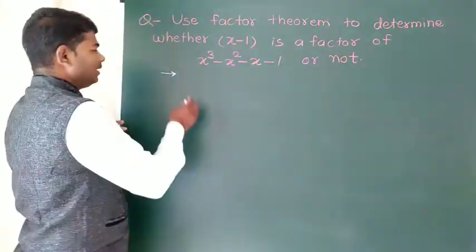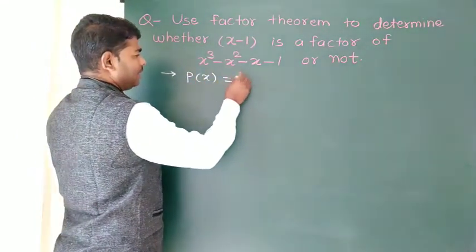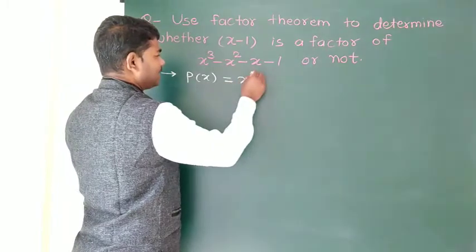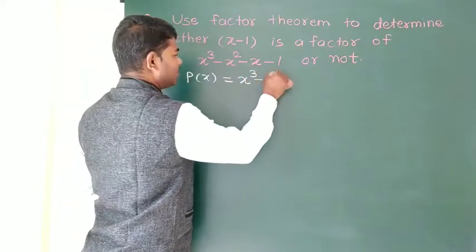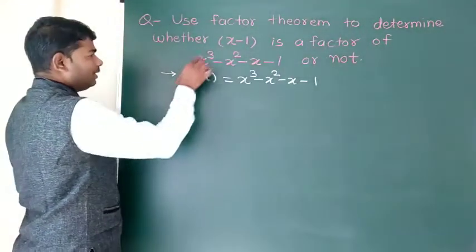The polynomial P(x) is equal to x cube minus x square minus x minus 1.